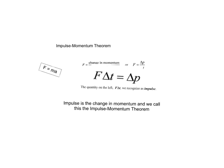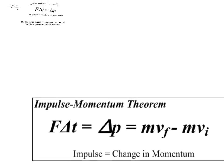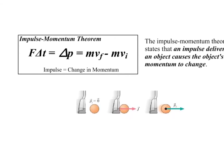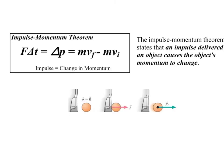So, then our equation for the impulse momentum theorem is this right here, where the impulse is equal to the change in momentum, which means we have a final momentum minus an initial momentum. The impulse momentum theorem then states that an impulse delivered to an object causes the object's momentum to change.